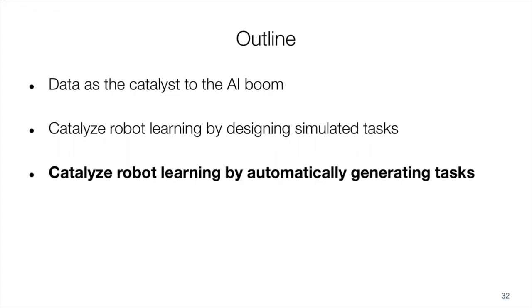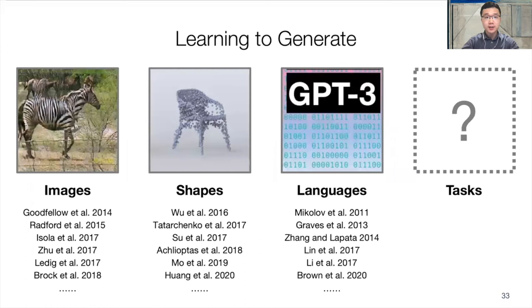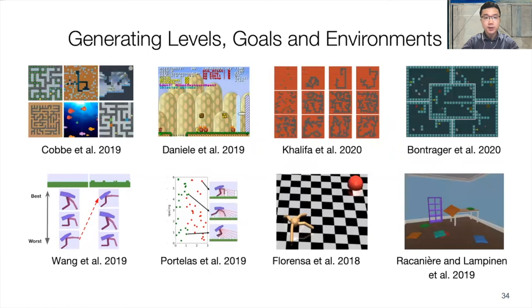Hi everyone, I'm Huang Fan from Stanford Vision and Learning Lab. Recent advances in deep generative models have enabled us to generate various formats of realistic data including images, shapes, and language. In this work, we ask: can we follow this line of thought and learn to generate tasks? An increasing number of works have been proposed to automatically create game levels in grid-world domains, mostly focused on maximizing diversity. In contrast, we aim to create suitable tasks that can expedite learning to solve certain target tasks of interest.